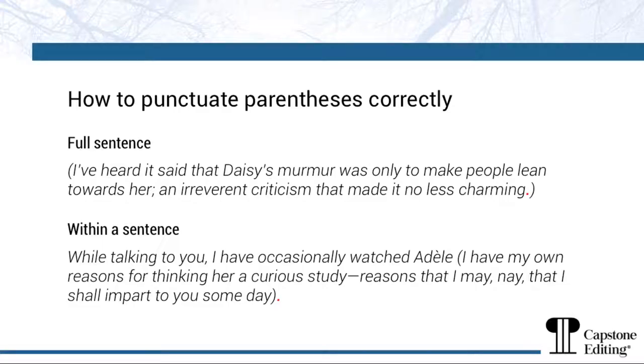To use parentheses correctly, the sentence must make complete sense if the parentheses and their contents were removed. It's also important to be mindful of how to punctuate them. When a whole sentence is contained within parentheses, such as in our example from The Great Gatsby, the full stop is also enclosed inside the brackets. When an aside is placed within a sentence before a full stop, as in the example from Jane Eyre, the full stop is placed outside the brackets. Again, the sentence should make complete sense if the parenthetical section were removed.